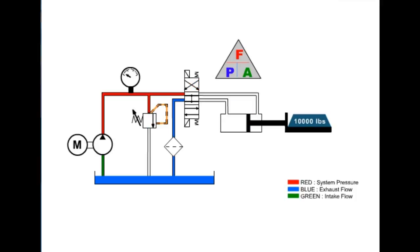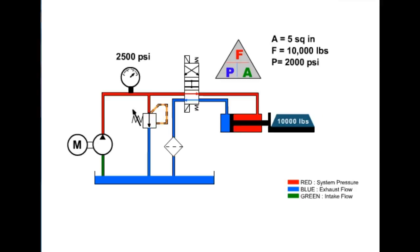During retraction, the effective area is only 5 square inches. This increases the required pressure to 2,000 psi needed to retract the load.